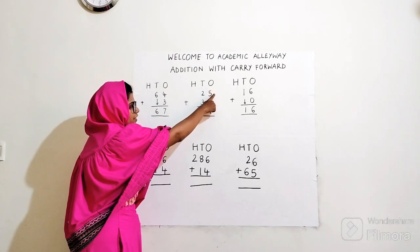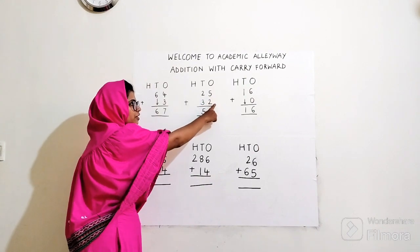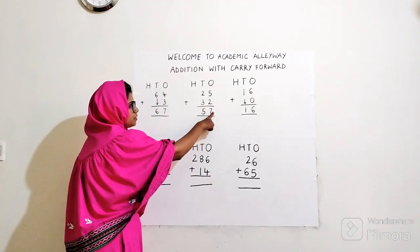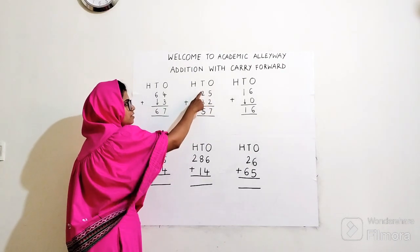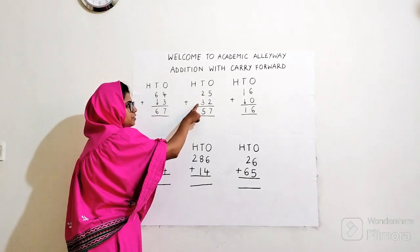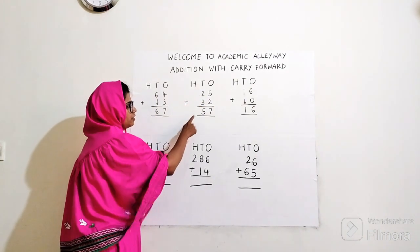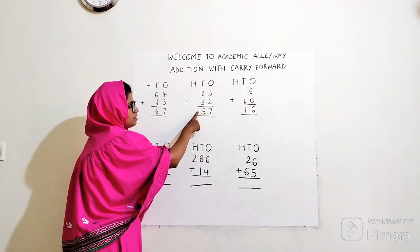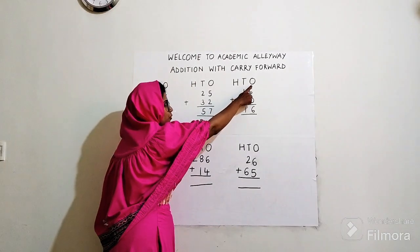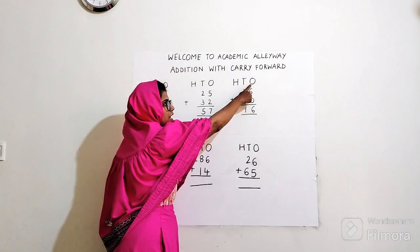Next example. Write H, T, O again. 25 plus 32. Start with ones: five plus two. Keep five in your mind, count after five an additional two numbers: six, seven. Seven comes here. Now move to tens: two plus three. Keep two in your mind, count additional three numbers: three, four, five. Five comes here. Answer is 57.